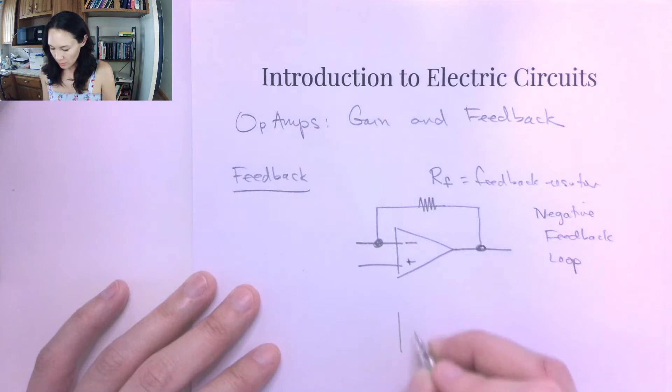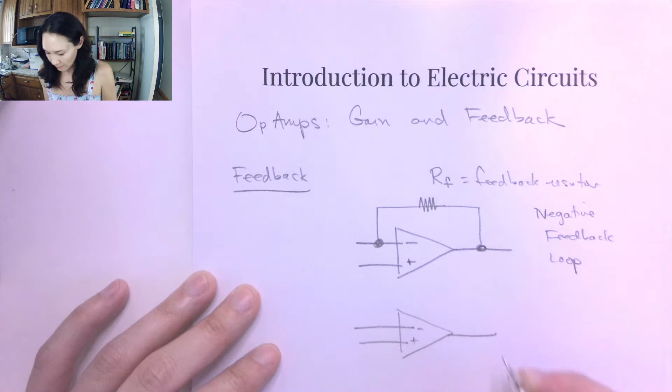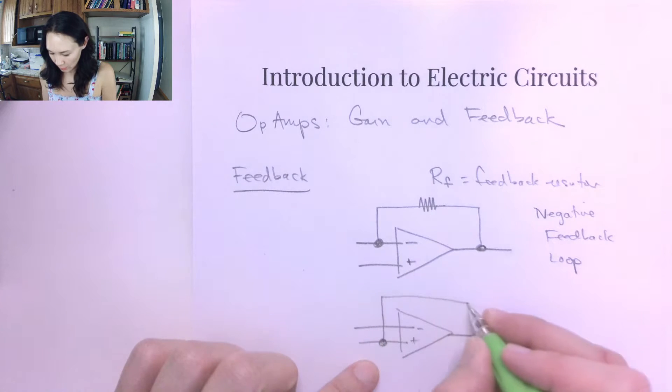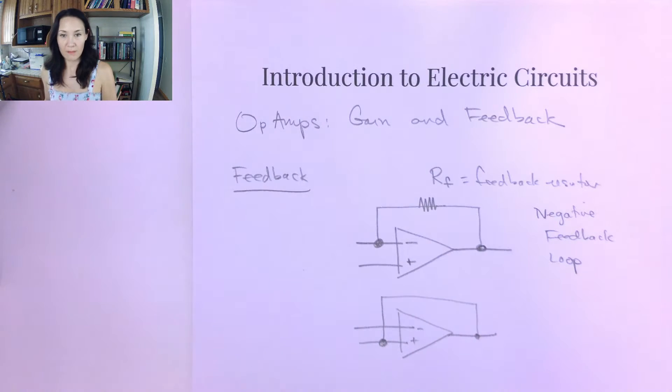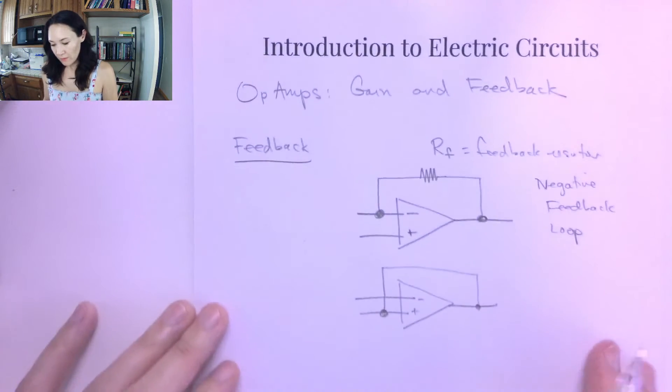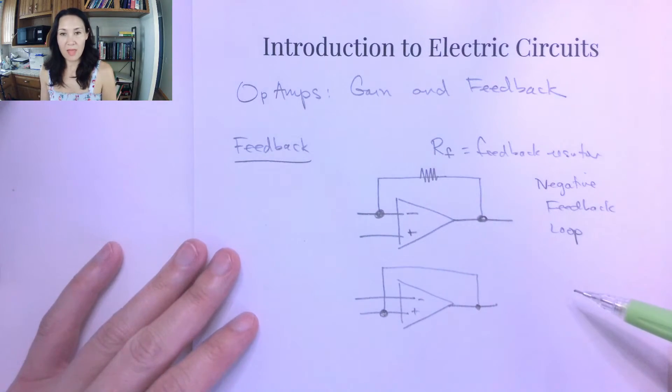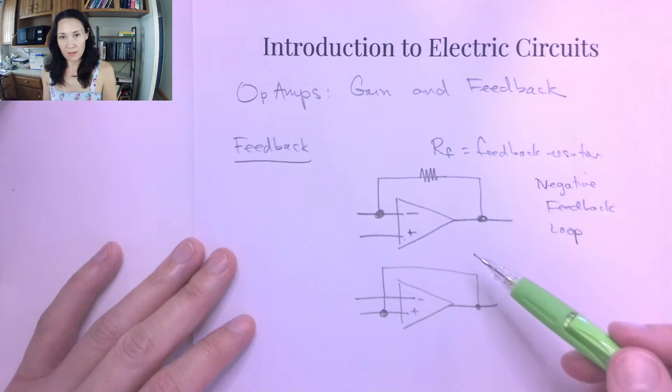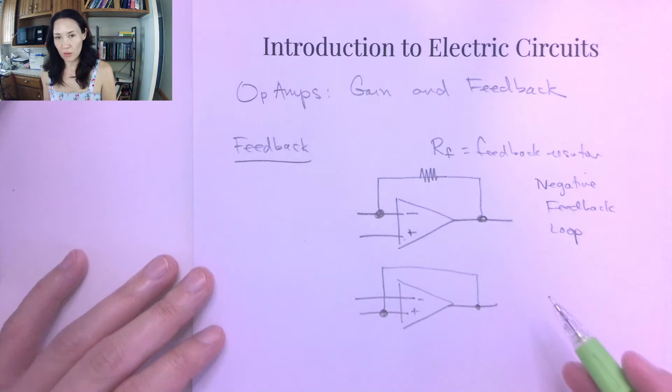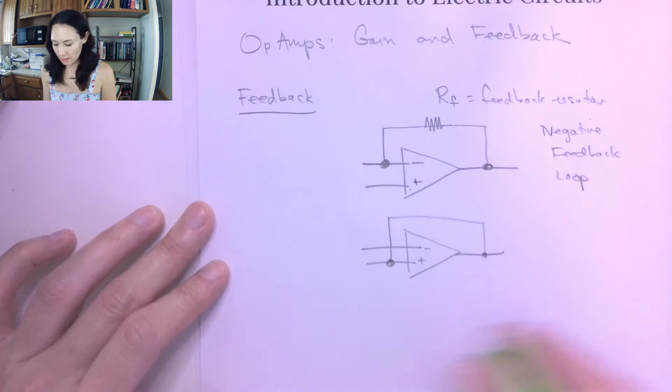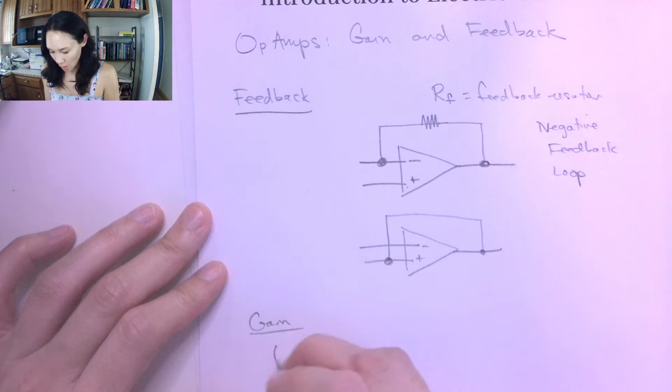And the other kind of feedback loop we can have is if we tie the output to the non-inverting input like this. So if you see a feedback loop like this, then the gain of this op amp is going to be what's called the closed loop gain. So we've already defined open loop gain, and now we're going to talk about closed loop gain.